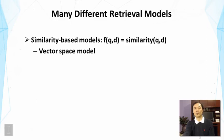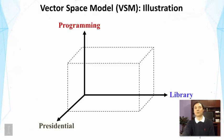The basic idea of vector space retrieval model is actually very easy to understand. Imagine a high-dimensional space where each dimension corresponds to a term. So here I show a three-dimensional space with three words: programming, library, and presidential.